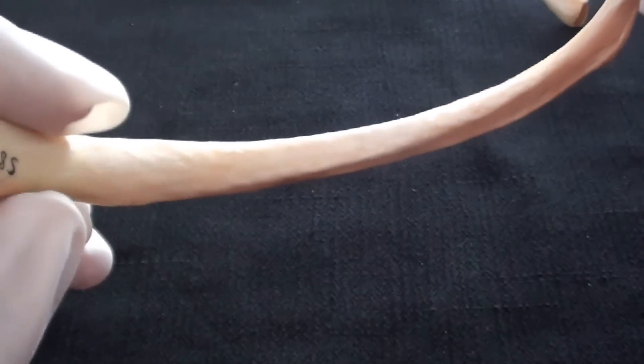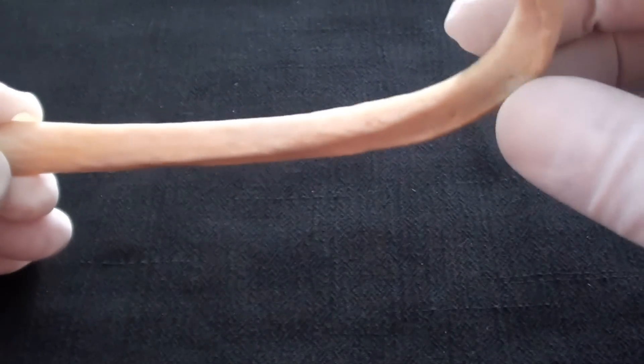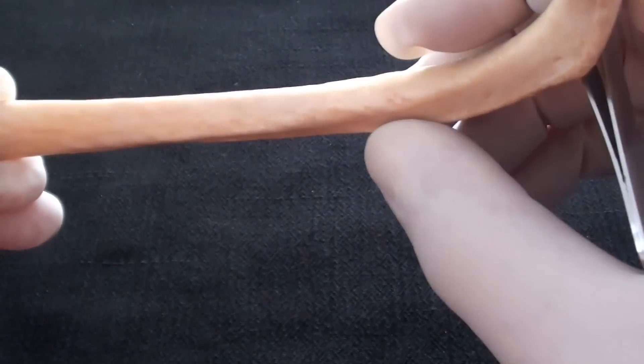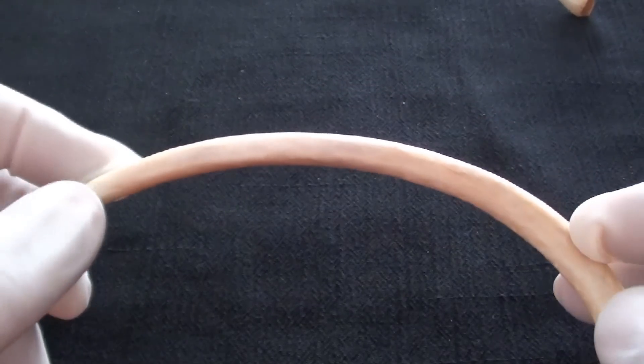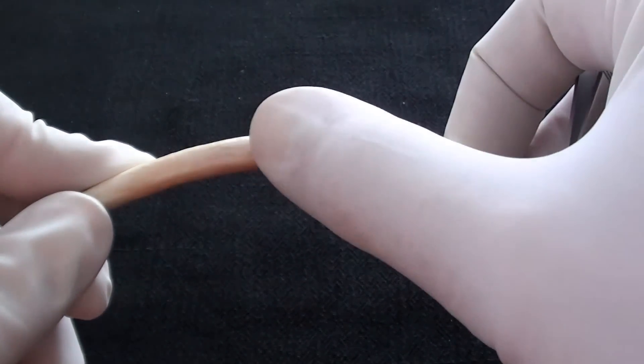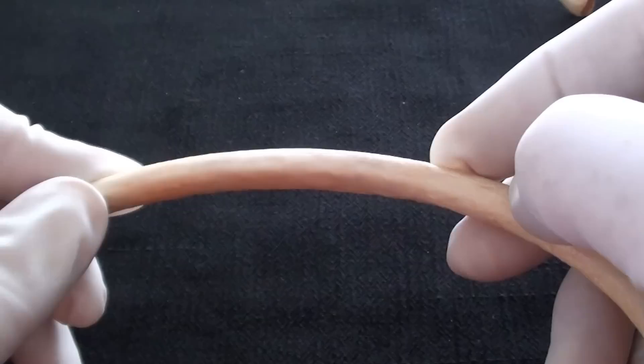On the inferior aspect of the rib, one can find out much sharper margin. Superiorly, the rib is quite nicely rounded and smooth.